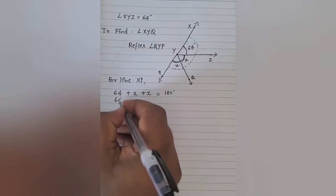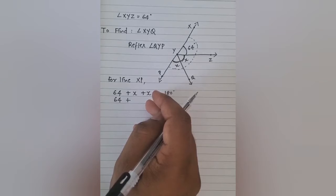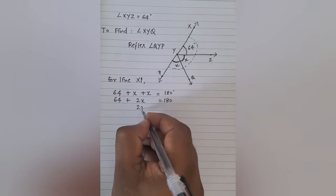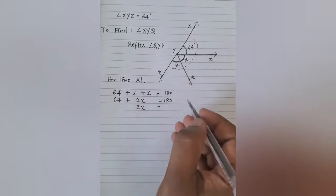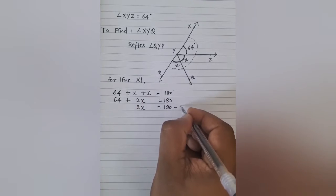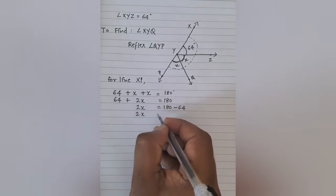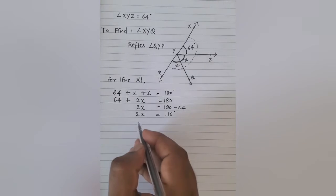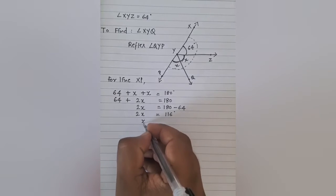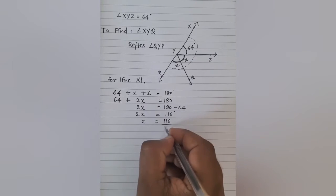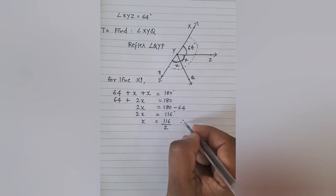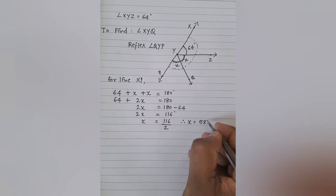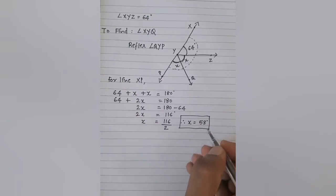If that's the case, then 64 is written as it is, x plus x becomes 2x. So 2x is equal to 180 degrees. The 64 goes to the other side, becomes 180 minus 64. So I get 2x is equal to 180 minus 64, which happens to be 116 degrees. So if 2x is equal to 116, what would be x? x is equal to 116 divided by 2, which will be 58 degrees. So the value of x is 58 degrees.